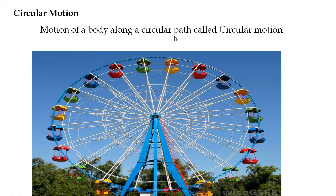Third, circular motion: it is the motion of a body along a circular path. The example shown is a Ferris wheel, which moves along a circular path and hence is known as circular motion.